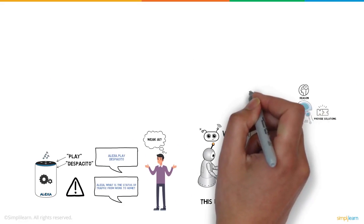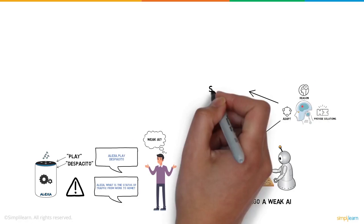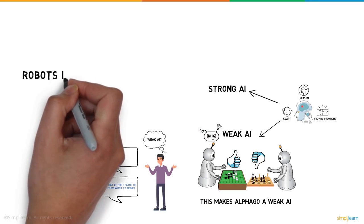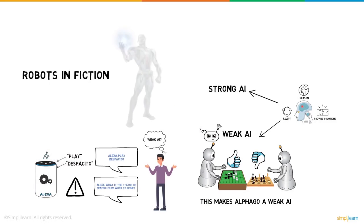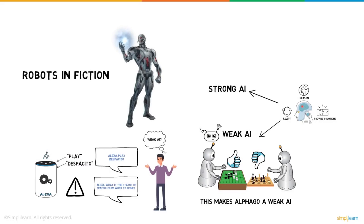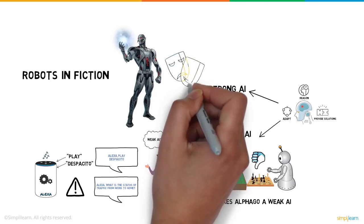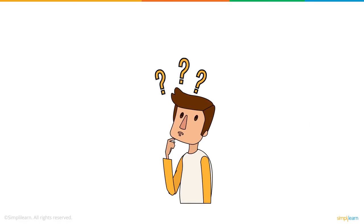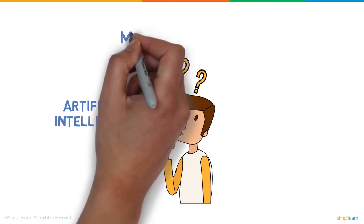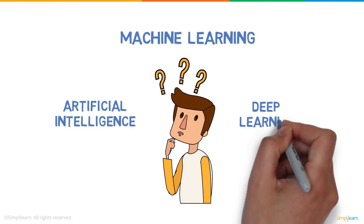That brings us to our second category, Strong AI. This is much like the robots that only exist in fiction as of now. Ultron from Avengers is an ideal example — it's self-aware and eventually develops emotions, making the AI's response unpredictable. You must be wondering: how is artificial intelligence different from machine learning and deep learning?